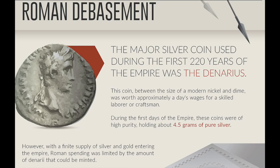Roman debasement. The major silver coin used during the first 220 years of the Roman Empire was the denarius — between the size of a modern nickel and dime, and worth approximately a day's wages for a skilled laborer or craftsman. During the first days of the empire, these coins were of high purity, holding about 4.5 grams of pure silver. For those of you silver enthusiasts, think of that — 4.5 grams of pure silver was worth a day's wages. That should lend to the argument that silver should be worth more than it is today.